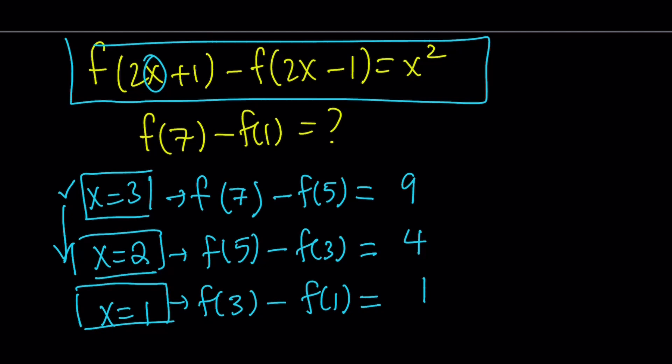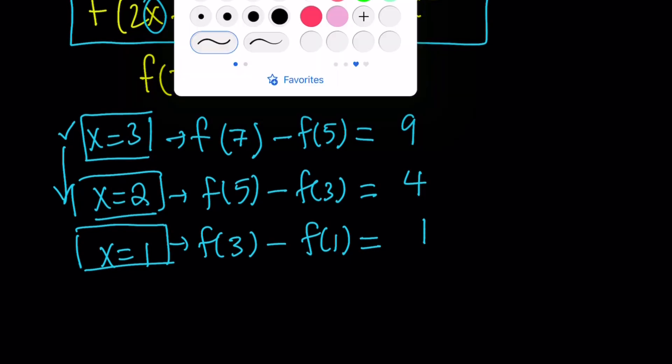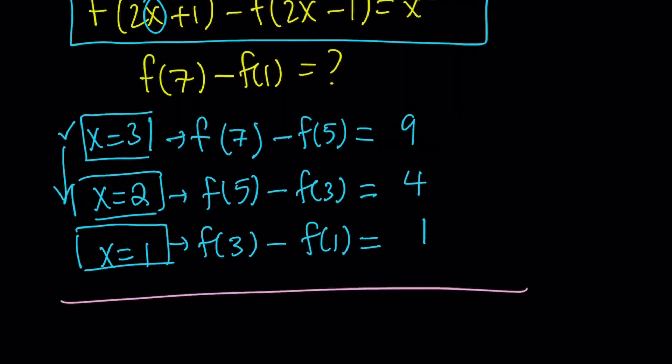Now we got the f(1), so we need to stop because if we don't stop, then we're going to go down to f(-1), f(-3), so on and so on. You don't want that. So let's stop here and evaluate. We're going to add these three equations because f(5) is going to cancel out, f(3) is going to cancel out. And we're going to end up with f(7) - f(1), which is what we need. And that is going to equal 1 + 4 + 9 = 14.